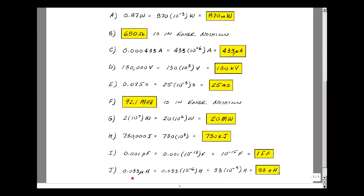And lastly, 0.033 microhenries would be 0.033 times 10 to the minus 6th. Move this over three more places. We'll multiply this by 10 to the minus 3. We get 10 to the minus 9th. 33 nanohenries. And this is Supplemental Problem 1.1.